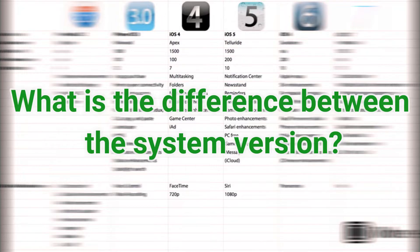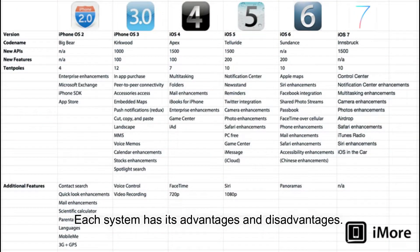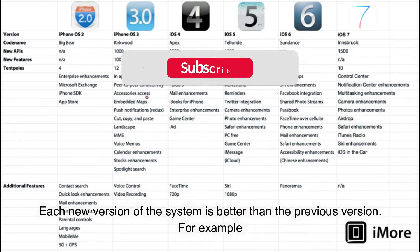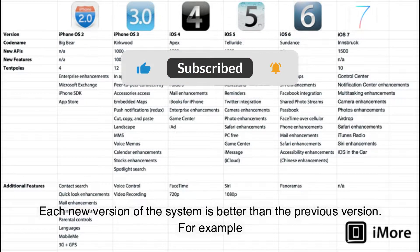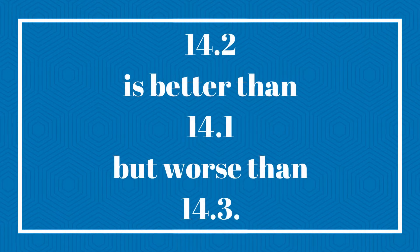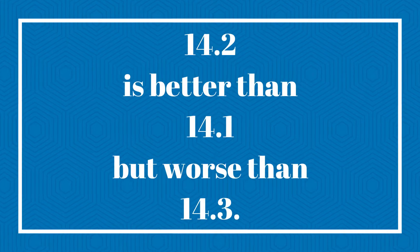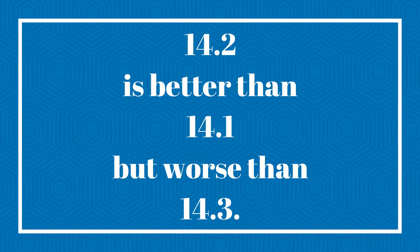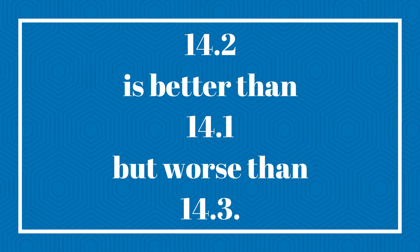What is the difference between system versions? Each system has its advantages and disadvantages. Each new version of the system is better than the previous version. For example, 14.2 is better than 14.1, but worse than 14.3.